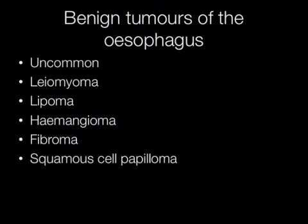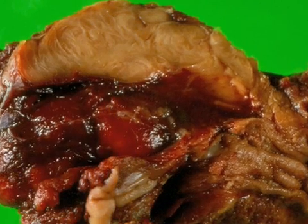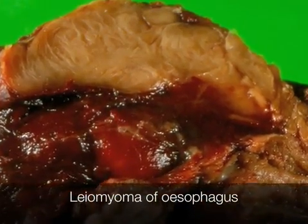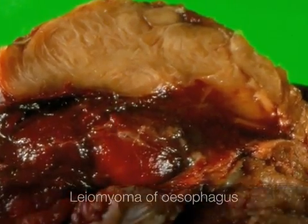Benign tumours of the esophagus are uncommon. They include leiomyoma, lipoma, haemangioma, fibroma, and occasionally squamous cell papilloma. Here we see an example of a leiomyoma of the esophagus.